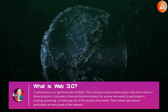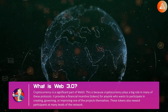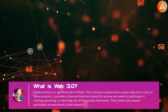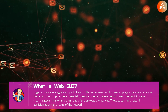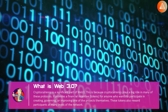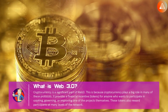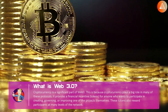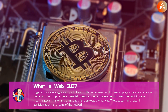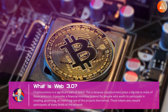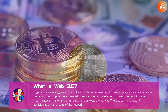To achieve a stable and secure decentralized network, network participants are incentivized and compete to provide the highest quality services to anyone using the service. When you hear about Web 3.0, you'll notice that cryptocurrency is often part of the conversation. This is because cryptocurrency plays a big role in many of these protocols — it provides a financial incentive for anyone who wants to participate in creating, governing, or improving one of the projects. Many web infrastructure protocols have issued utility tokens that govern how the protocol functions and reward participants at many levels of the network.